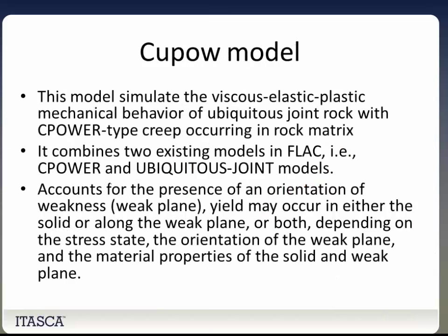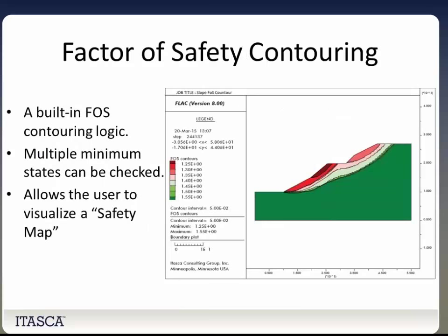Now I'm going to go through some of the other features added to FLAC 8. We've added the ability to plot factor of safety contours. This was in FLAC 7 but required a Fish function. Now it is built directly into the GUI, making it quicker and easier to use. Other software such as SLIDE has this ability, and it's nice for users to have it in FLAC as well. It also allows for multiple minimum states to be checked and visualized.